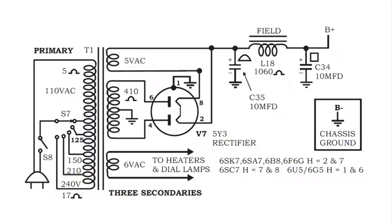And then the secondary is a step-up winding. And between pins four and six is about 700 volts AC.